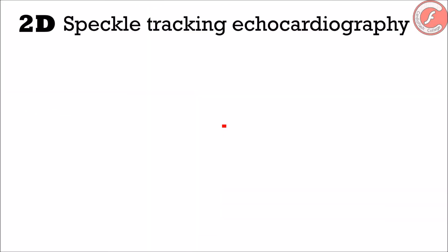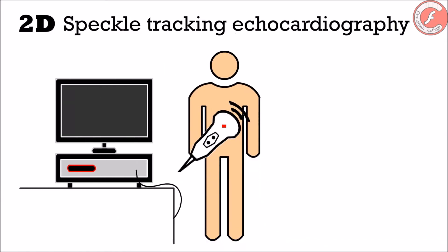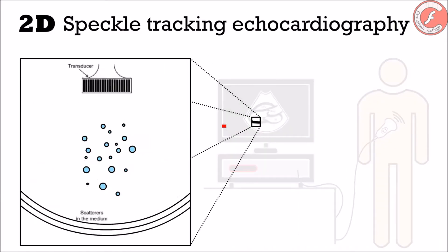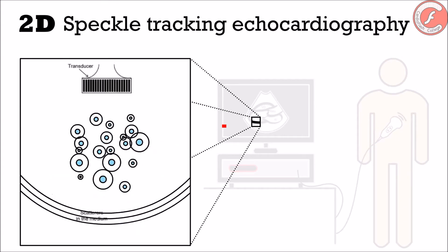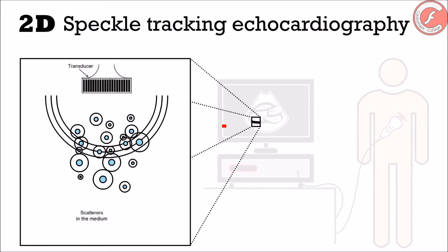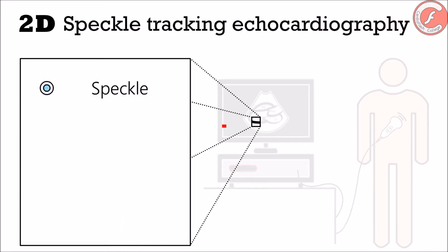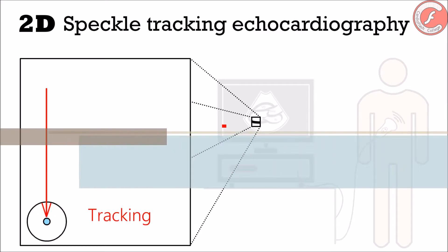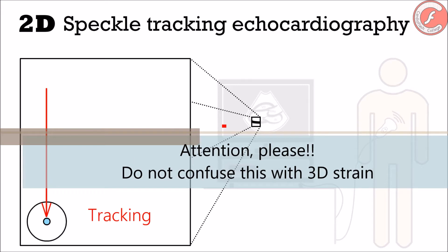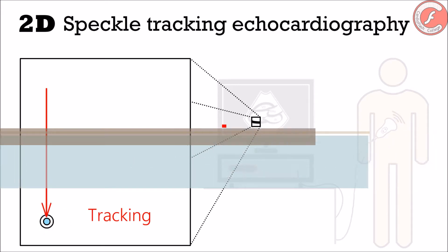But what is the speckle tracking two-dimensional? Very simple: it is an echocardiographic display mode that allows us to identify the acoustic irregularities produced by the interaction of the ultrasound waves within myocardial tissue. These acoustic markers, also known as speckle, are located by the software and followed in their displacement through the three dimensions of the space and along the cardiac cycle, giving information about the movement and the global and segmental deformation of the myocardial tissue.